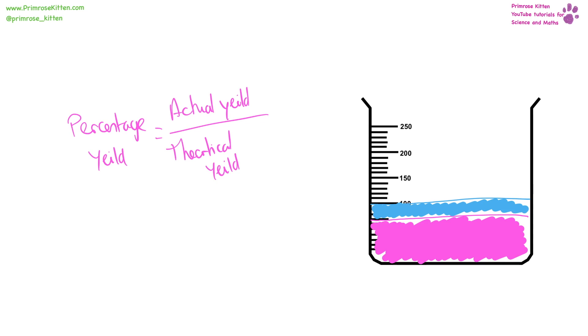To work out percentage yields, you need to take your actual yield and divide it by your theoretical yield.